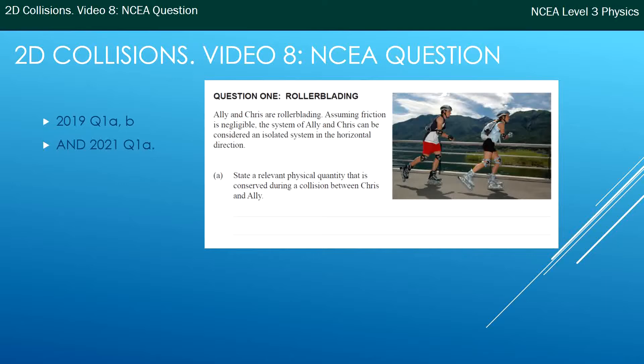If you want to go and try them yourself, feel free to stop the video and do that, but it might be helpful to watch me do it and then see if you can do it independently. So Ellie and Chris are rollerblading, assuming friction is negligible. The system of Ellie and Chris can be considered an isolated system in the horizontal direction. State a relevant physical quantity that is conserved during a collision between Chris and Ellie.